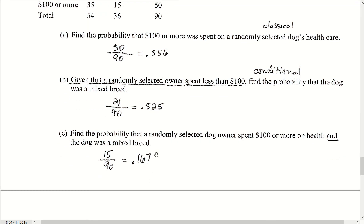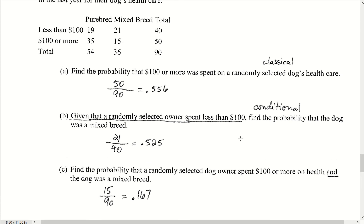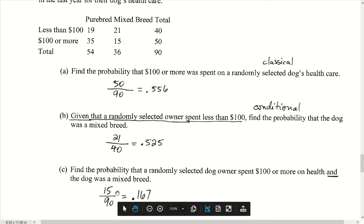In part C we find the probability that a randomly selected dog owner spent $100 or more and the dog was a mixed breed. We need both conditions — $100 or more and mixed breed. That refers to these 15 dogs, which meet both descriptors. It's 15 out of 90, which rounds to 0.167.